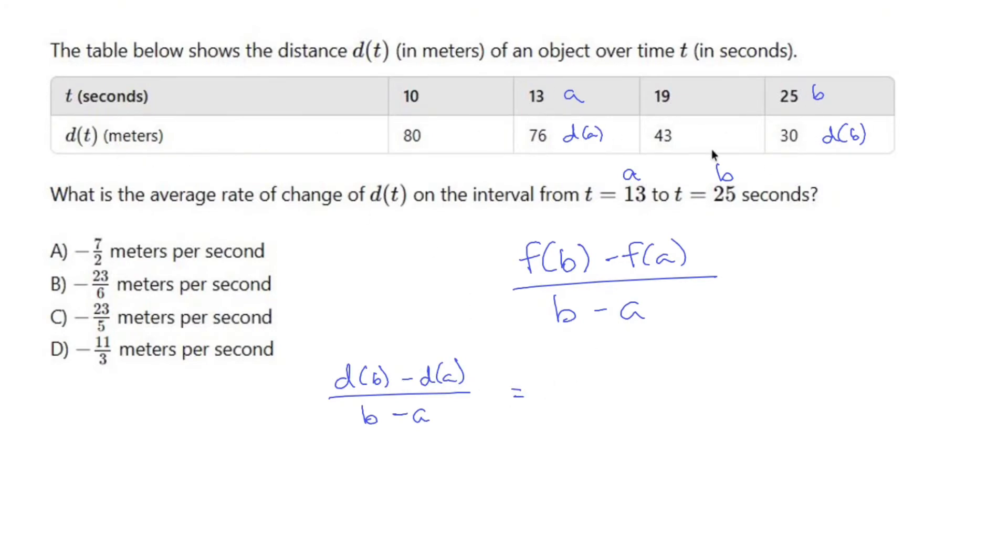So d(b) is 30 minus d(a) is 76 all over b which is 25 minus a which is 13. So what is that? Negative 46 over 12 which simplifies out to, they're both divisible by 2.